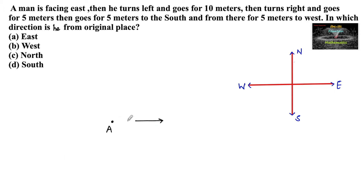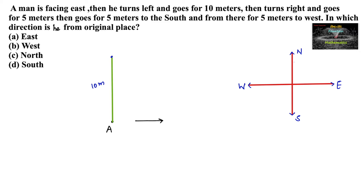He is facing east but not moving. Then he turns left. When you are facing east and turn left, you are moving towards the north direction. He goes for 10 meters. Then he turns right — he is now facing north, and taking a right means he is moving towards the east direction.